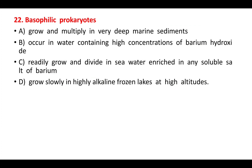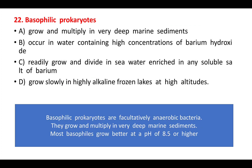Question 22: basophilic prokaryotes are anaerobic bacteria that grow and multiply in deep marine sediments, requiring a pH of 8.5 or higher. The correct option is A: they grow and multiply in very deep marine sediments. Options B, C, and D — involving barium hydroxide, soluble barium salts, or alkaline frozen lakes — are all wrong.